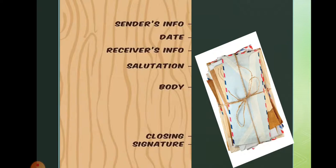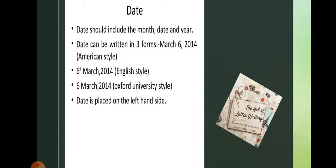The fifth component is the body of the letter, and the sixth is the closing — also called the subscription — followed by the signature. Regarding the date, it should include the month, date, and year.